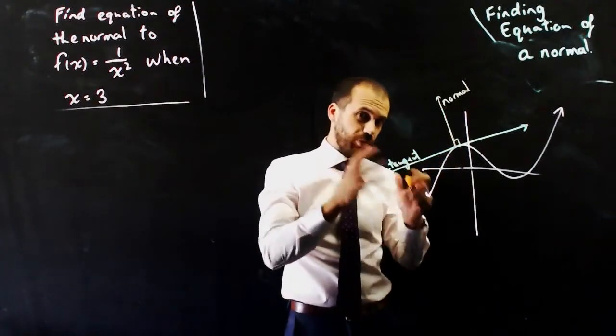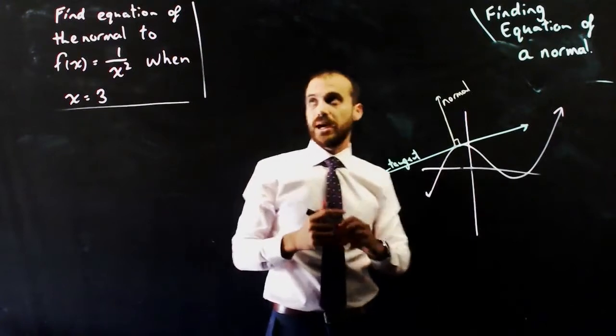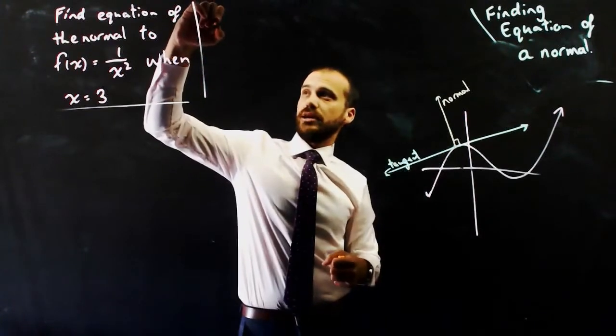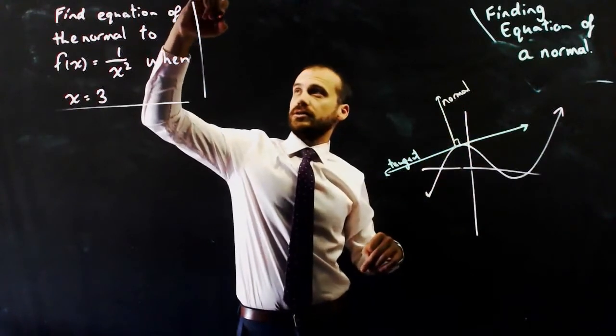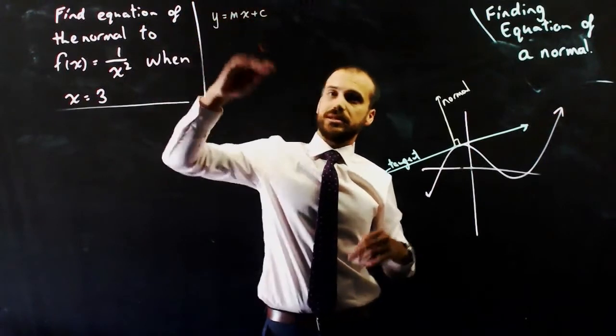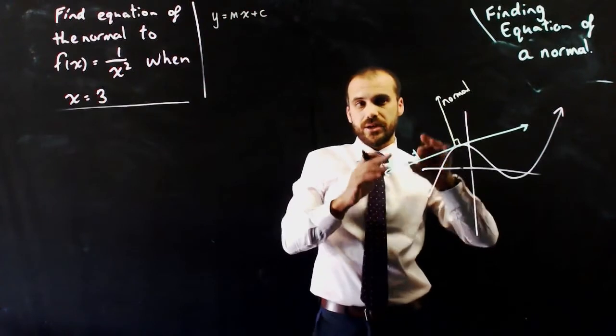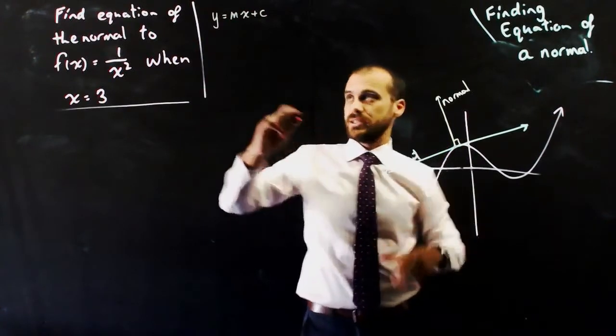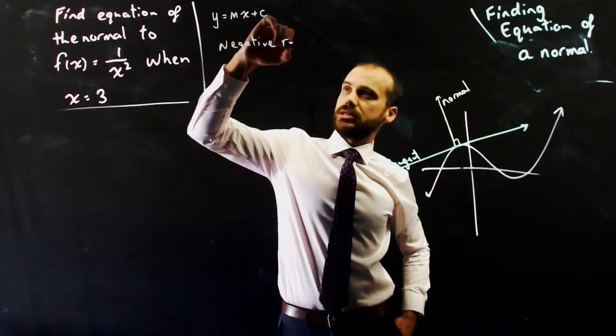So 90 degree angle, that's what a normal is. Now, you should remember from back in the day that if you want to find a perpendicular line, so if y equals mx plus c, if you want to find a line that's perpendicular to that, you'd use something called the negative reciprocal.